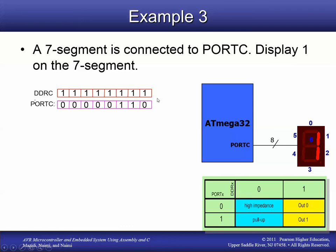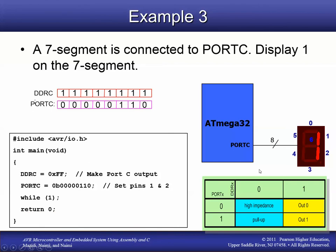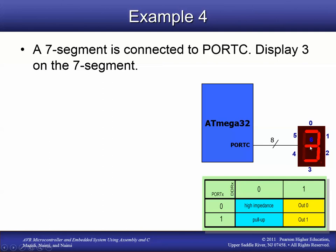We need DDRC set to all ones for output, and Port C gets the pattern 0x06 in hex — so pin 1 and pin 2 are high voltage and all others are low. The program sets DDRC to make all Port C pins output, then writes 0x06 to Port C to make those two pins high voltage and the rest low, turning on the two segments that form the number one.